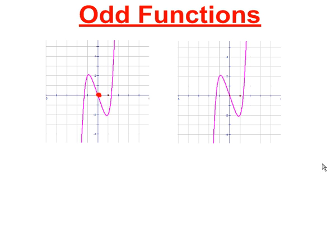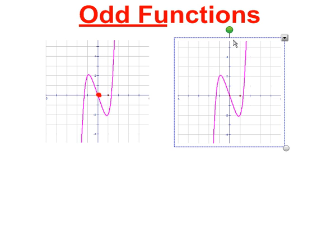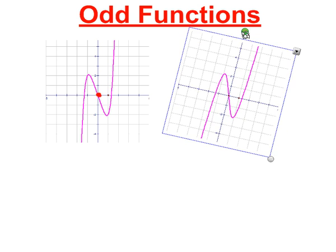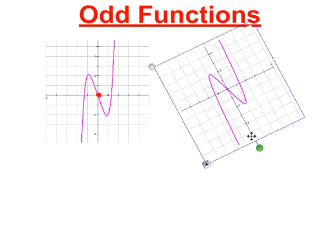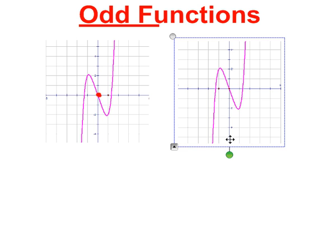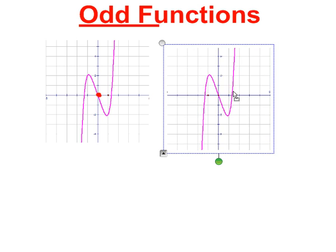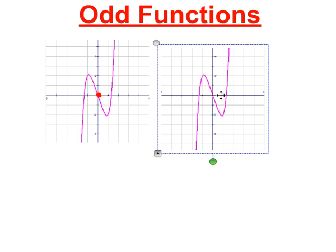For example, if I take a copy of my purple graph here and rotate it around the origin 180 degrees, you can see that I get the same exact graph that I started with. That means that it's an odd function.